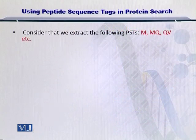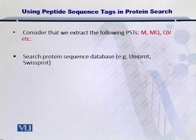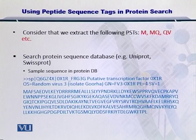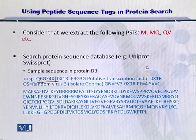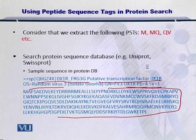Let's take a look at the example we are following. We have the following peptide sequence tags that were reported, and now we would want to search them in the protein sequence database. There are multiple protein sequence databases available online and you can choose the one you prefer. Below I have listed a sample sequence from UniProt, where you can see the accession numbers, the description of the protein, and the sequence of the entire protein.